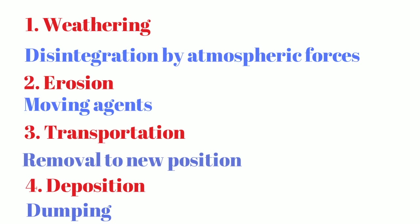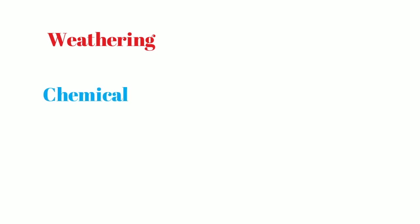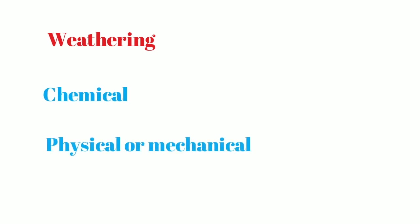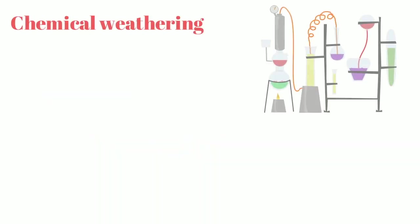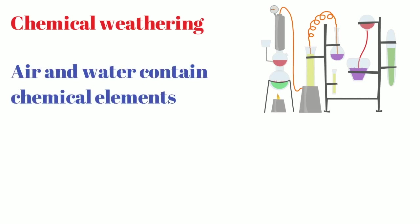We will talk about weathering. Weathering is of two types: chemical and physical weathering. In chemical weathering, air and water contain chemical elements in small quantities that act on rocks over a long period of time.